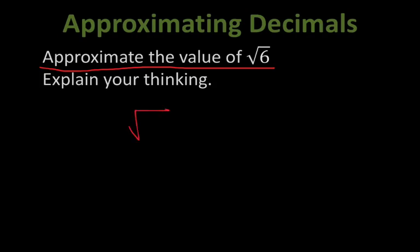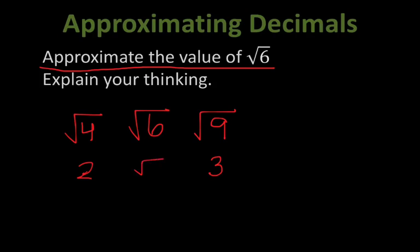From what we know prior to this lesson, the square root of 6 is between the square root of 4 and the square root of 9. So we know that the square root of 6 is somewhere between the numbers 2 and 3 — it's greater than 2 but less than 3. But I can't just say 2 and a half, because I don't know if that's accurate. If you're asked to approximate to the hundredths or tenths place, you've got to have a method to do that.